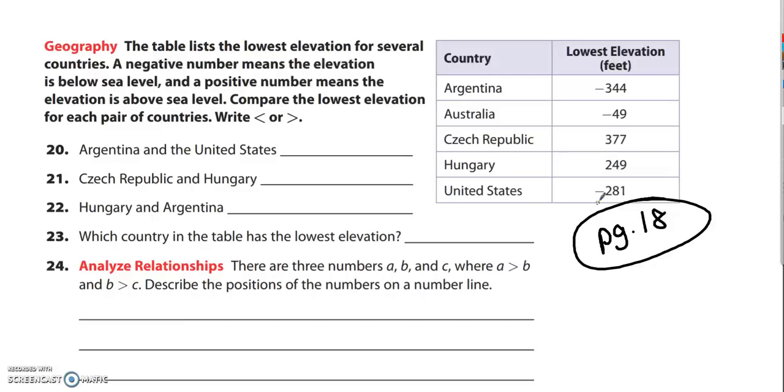So what you do on these is find the country that they're listing in the table and the one on the left is Argentina, so I'm going to put that number, negative 344, on the left and the United States is negative 281 on the right.